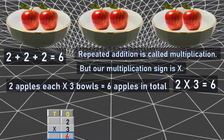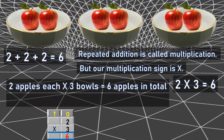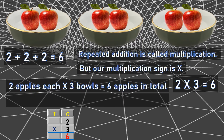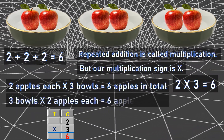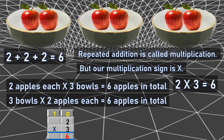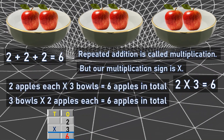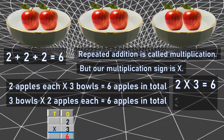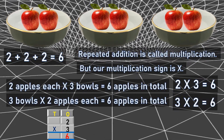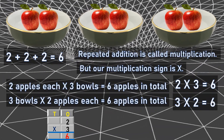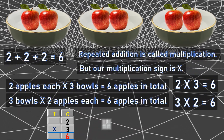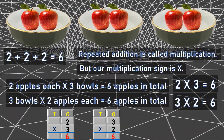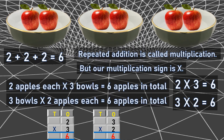Now let's take it in another way. You are going to recall the three table. Three bowls into two apples each is equal to six apples in total. So now we will calculate the three table: three into two is six. Or you can say three twos are six. This is how we are going to do it — three into two equals to six.